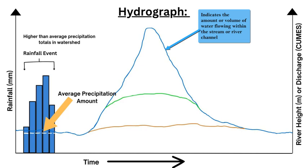Here we have a hydrograph. The hydrograph is set up with three axes: the horizontal x-axis is time, the left y-axis is rainfall in millimeters, and the right y-axis is river height in meters, which also corresponds to the discharge of that river measured in cumecs — cubic meters per second. The blue line is the discharge and river height, and the blue bars on the left show the increased amount of precipitation over a certain time, corresponding to the storm event that will fall into that particular watershed, catchment area, or drainage basin and make its way into the river.